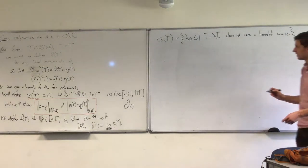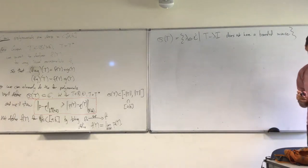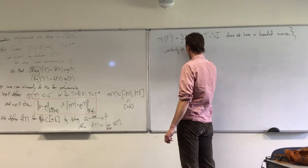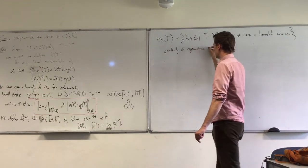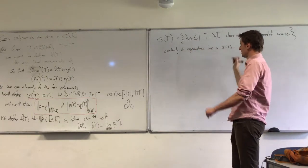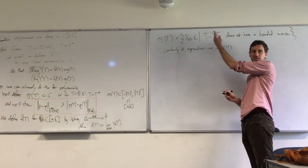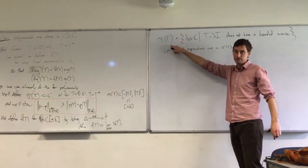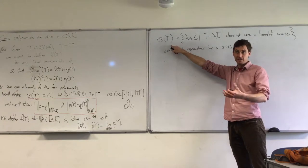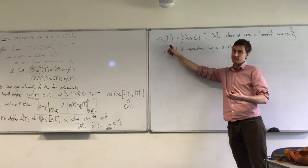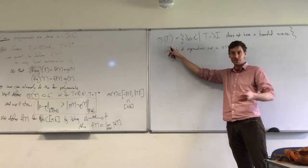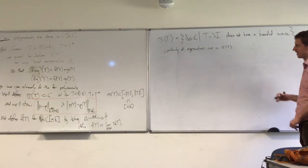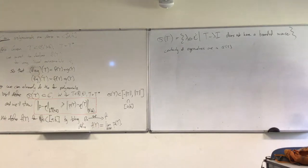The spectrum is pretty easy to define. The spectrum of T is all complex numbers λ such that T minus λI does not have a bounded inverse. In particular, certainly all eigenvalues are in the spectrum, because an eigenvalue means this operator has a kernel, so it can't possibly have an inverse. But in general, in the infinite-dimensional case, the spectrum will be bigger than the set of eigenvalues — we can have operators with a non-empty spectrum but no eigenvalues at all.